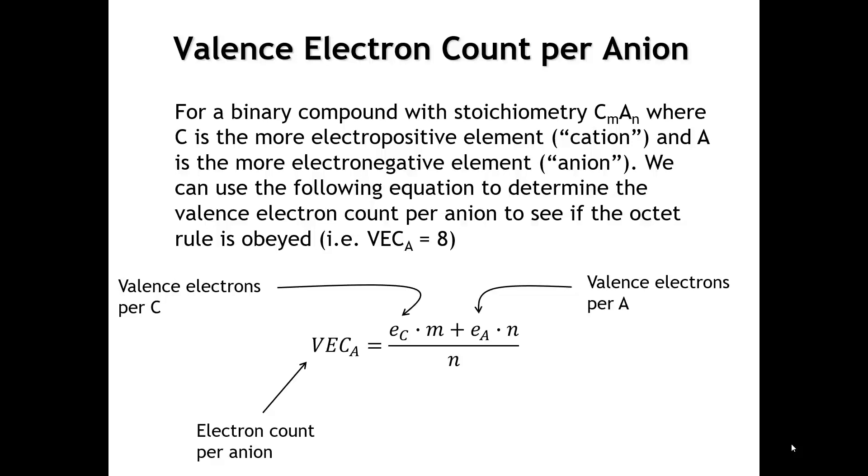If we have something like sodium chloride, well, the sodium has one valence electron. Chlorine has seven. We know the sodium can give up its electron to the chlorine so that the chlorine now has an octet. And that's like a textbook ionic compound. And so, in this formula, E of the cation would be one for sodium. There's only one sodium atom in the formula unit. So, M is one. The number of electrons per anion is seven. The chlorine atom has seven valence electrons. And there's one chlorine atom per formula unit. So the numerator becomes eight. And we divide by the number of anions in the formula unit, which is one. And so, we come up with eight.